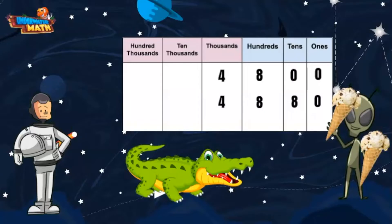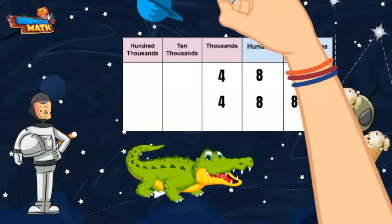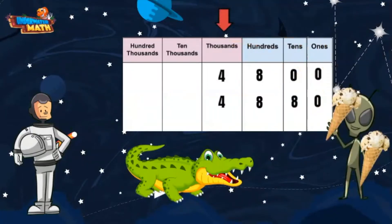Ali, can you help him figure out which way the comparison symbol goes? Of course I can — especially since Lenny made us this helpful place value chart. I remember we are supposed to compare numbers digit by digit starting from the largest place value.